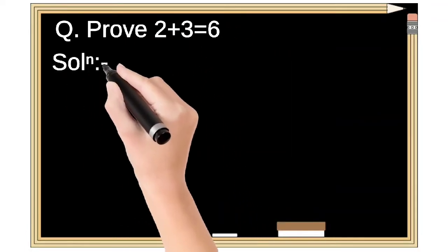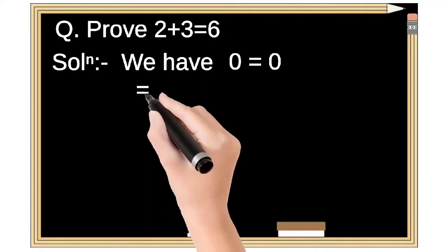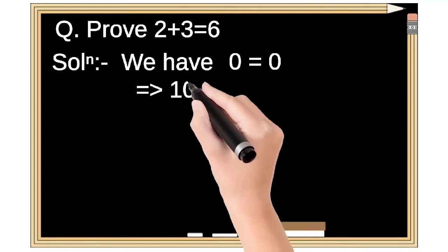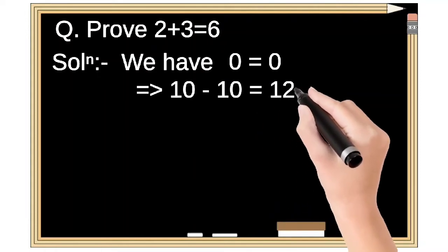Proof: 2 plus 3 equals 6. We have 0 equals 0. 0 can be written as 10 minus 10 and 12 minus 12.